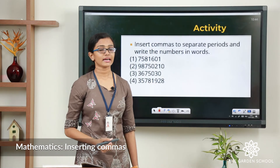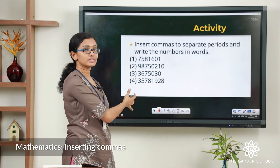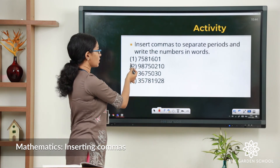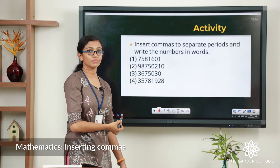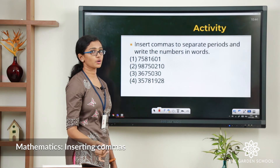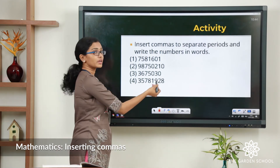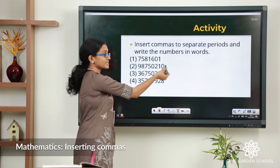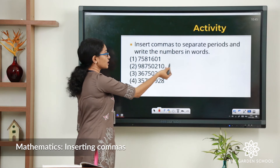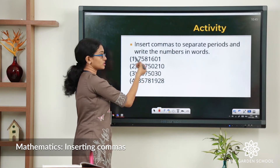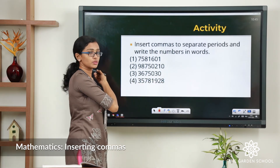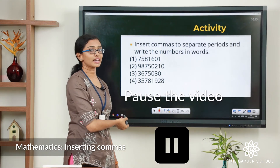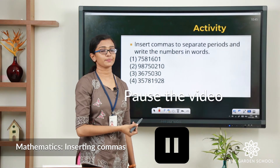Let us do an activity now. I have given a few questions here. You have to insert commas and write the numbers in words in your notebook. Note that whenever we are inserting commas, you start grouping the places from right to left — you start from the 1s and go to the higher places. Please finish this activity and come back.